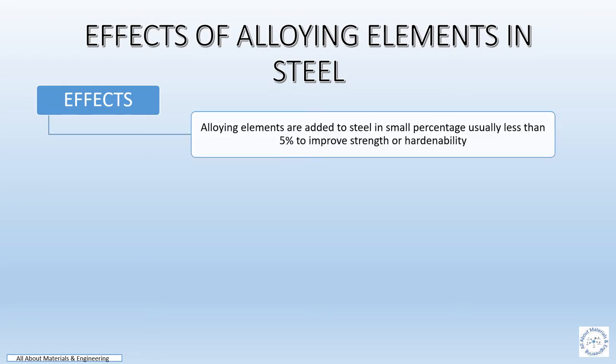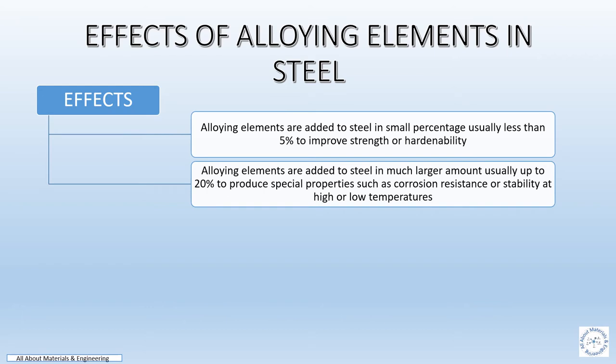Alloying elements are added to steel in small percentages, usually less than 5%, to improve strength or hardenability. Alloying elements are also added in much larger amounts, usually up to 20%, to produce special properties such as corrosion resistance or stability at high or low temperatures.